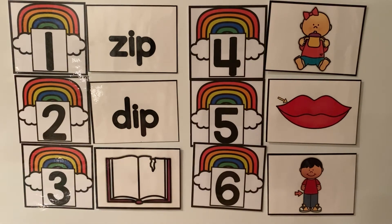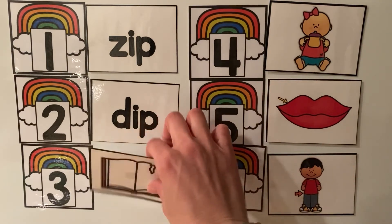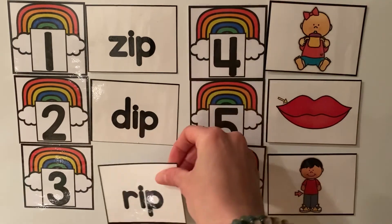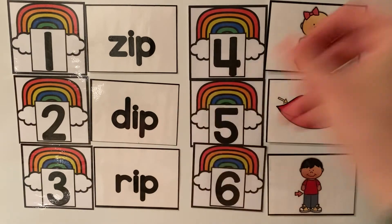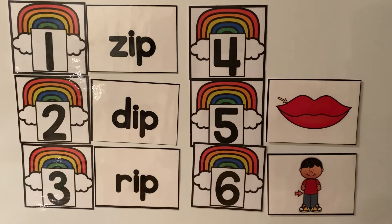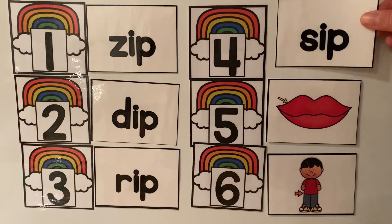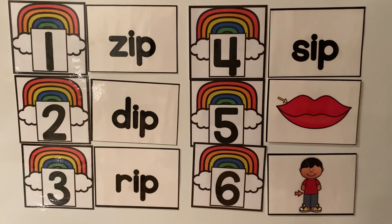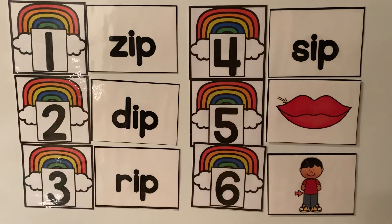The third word is rip, spelled R-I-P. The fourth word is sip, spelled S-I-P.